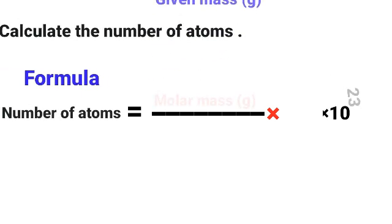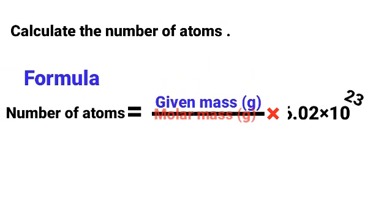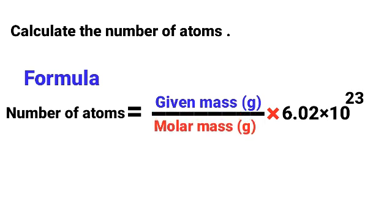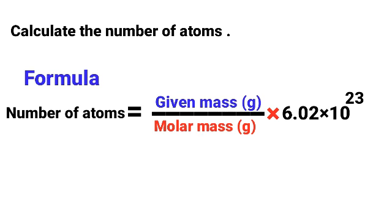To calculate the number of atoms from the given mass of a substance, we have a formula: given mass of the substance divided by molar mass of that substance, multiplied by 6.02 × 10²³. By this formula you can calculate the number of atoms from the given mass of any atom.